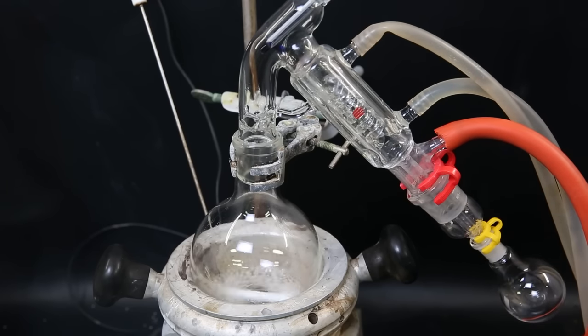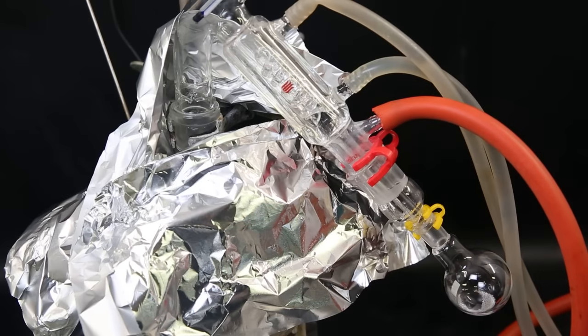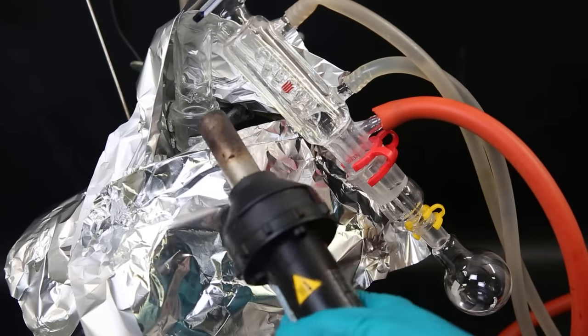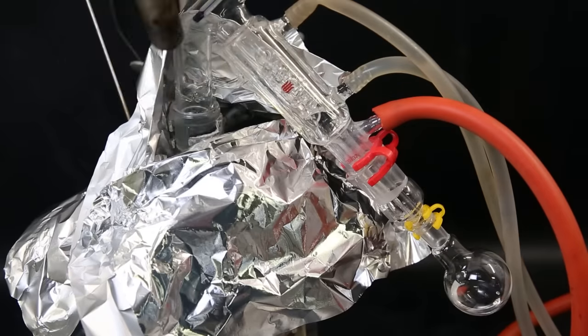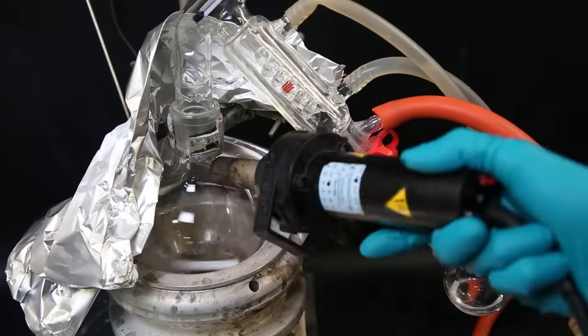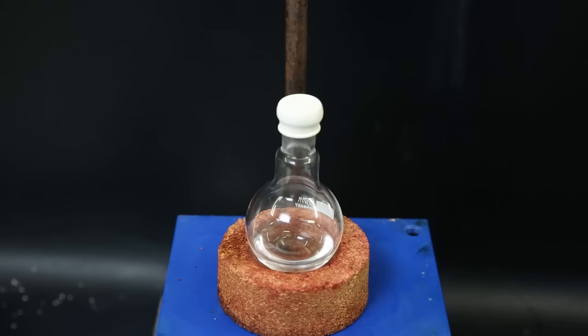Tetrabutyl tin has a high boiling point, so I increase the temperature, pull a vacuum, and insulate the flask with some aluminum foil. I also assist the distillation with a heat gun, and after a bit, the tetrabutyl tin starts coming over. After a while, I collected all of the tetrabutyl tin and the yield turned out to be 82%.